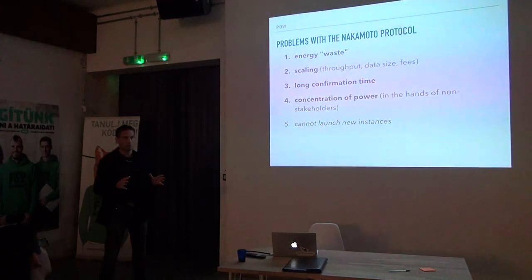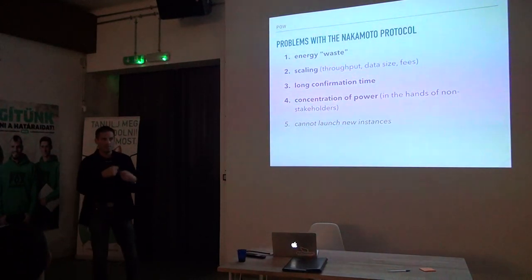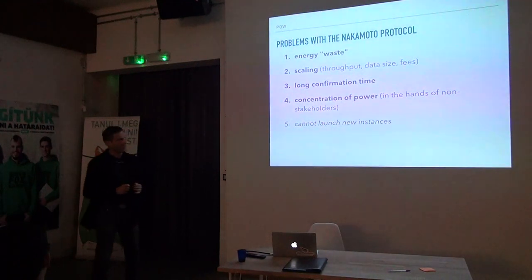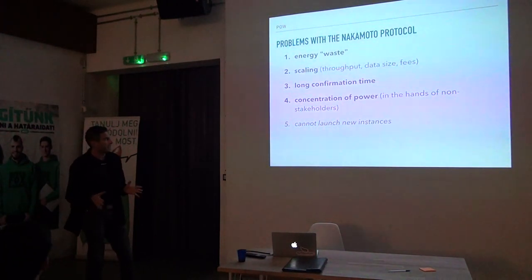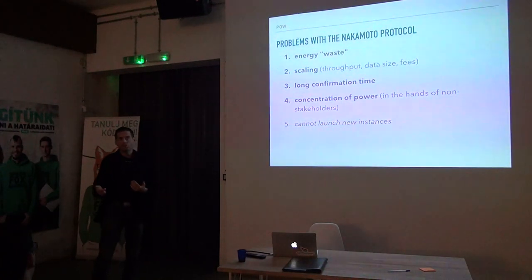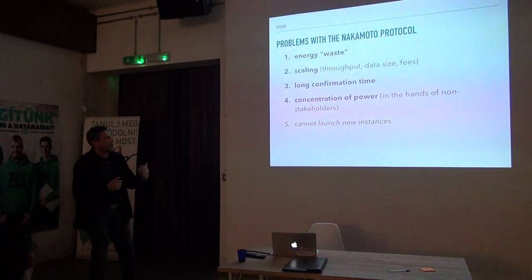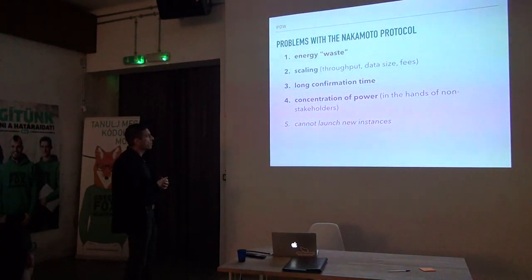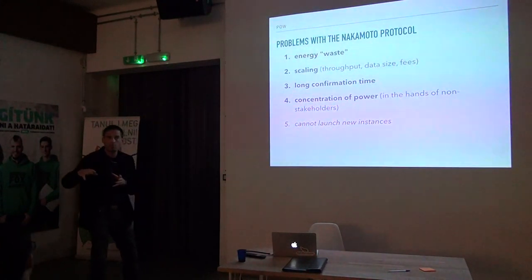Satoshi Nakamoto, the designer of Bitcoin, didn't think about this concentration at the time. His idea was that everyone with a computer would be running the Bitcoin software and doing a little bit of mining in the background. But since specialized hardware — ASICs — was developed for mining, now a few mining pools and ASIC miners control most of the process. They are the only ones doing mining, and you cannot mine anymore. This concentrates power in their hands, and they are not real stakeholders in the system — once they mine Bitcoin, they usually sell it immediately. It's just a pure source of money for them, a business. They don't really care about what happens in the Bitcoin system.